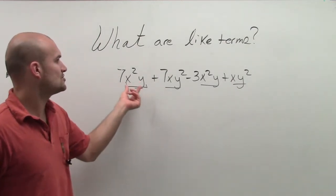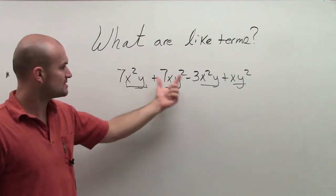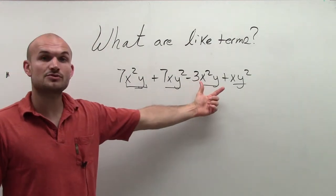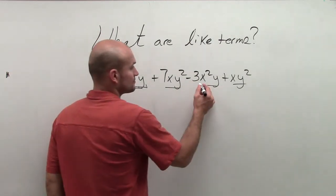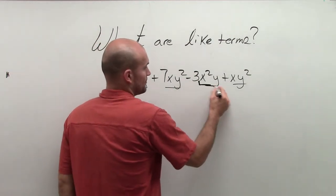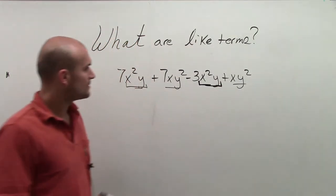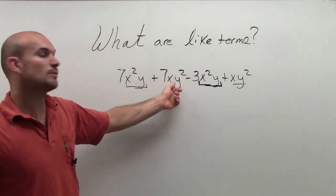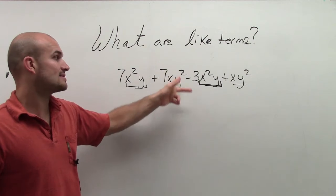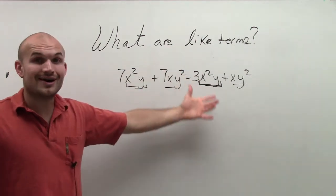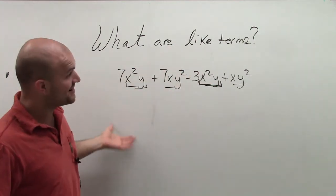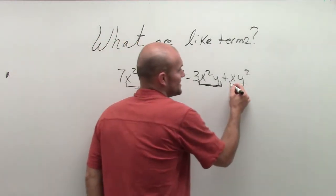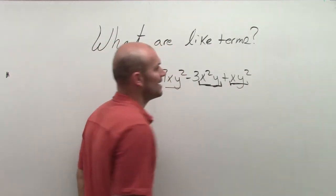So where else do I have an x squared and a y? Does this term have an x squared and a y? No. Does this term have an x squared and a y? Yes, it does. Then let's look at the next one. Here, my variable factors are x and y squared. Is there anywhere else I have an x and a y squared? Yeah, I have an x and a y squared over here.